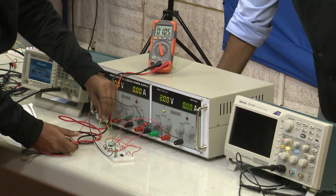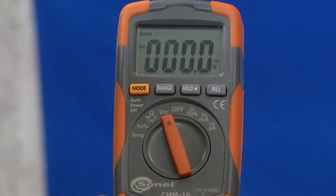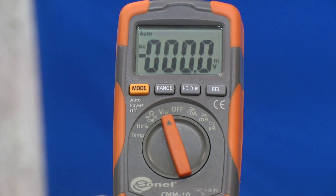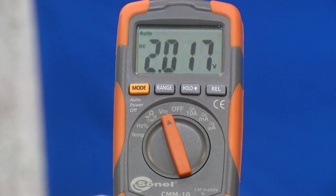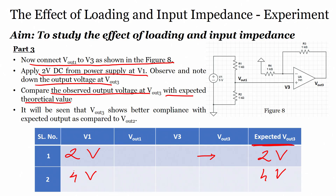The output of the non-inverting amplifier, when connected to the potential divider output, is 2.017 volts. So when 2 volts was applied across the potential divider, the output at V3 is 2.017 volts — extremely close to the expected 2 volts. We are not getting any loading effect here.